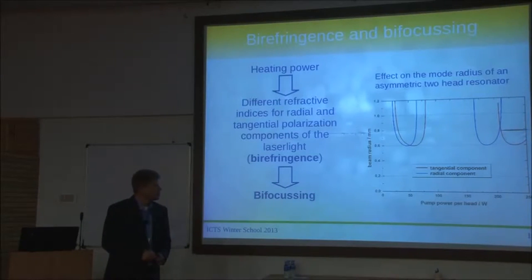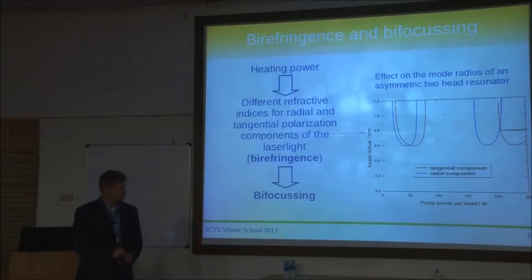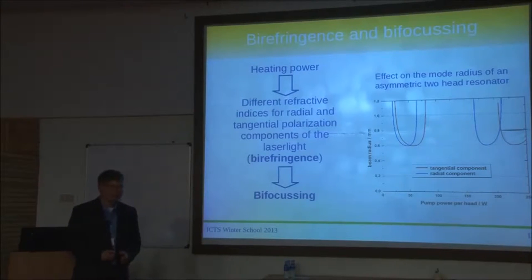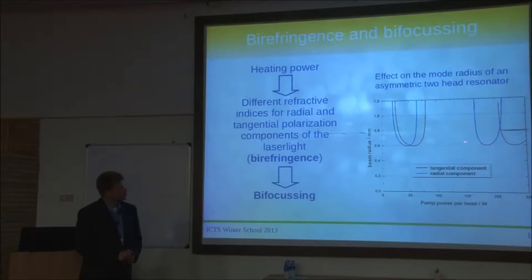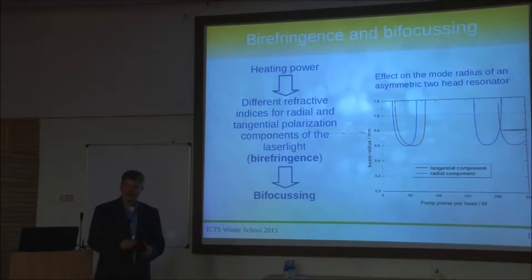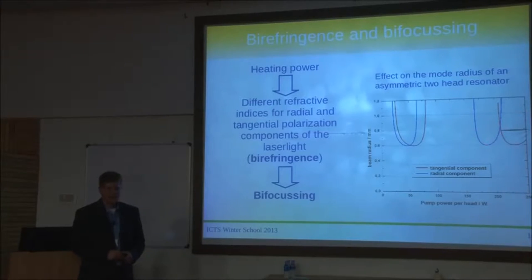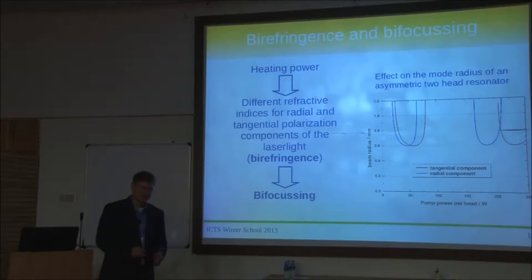One consequence of birefringence is bifocusing: the tangential and radial components have different stability ranges, meaning their curves are really far apart with barely any overlap. That's bad if you want to build a linearly polarized laser, because linearly polarized light consists of both the radial and tangential components. If these two stability ranges don't overlap, you basically can't build a linearly polarized laser. Another effect is that birefringence creates a phase shift for the polarization components that depends on the radial position, causing depolarization.